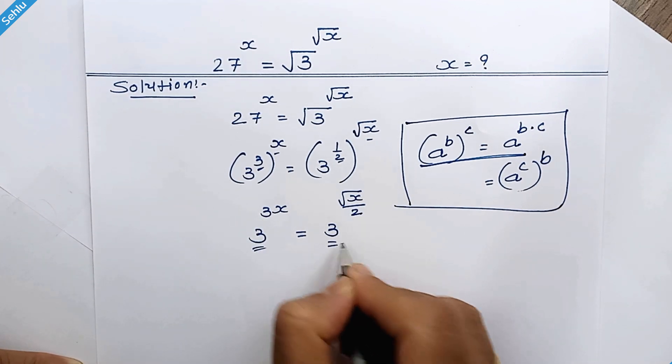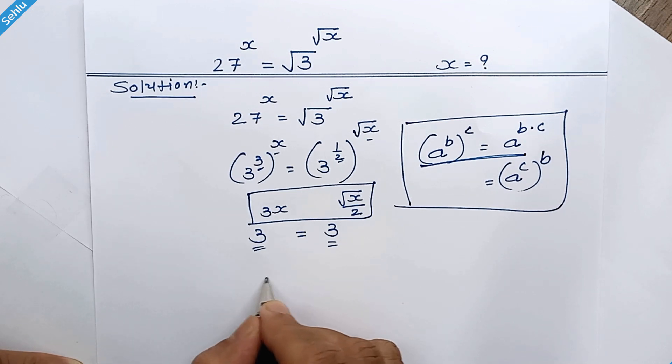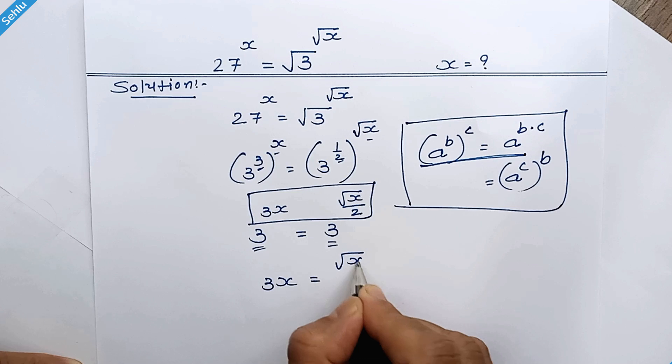3 and 3 so we can equate their exponent. 3x is equal to square root of x over 2.